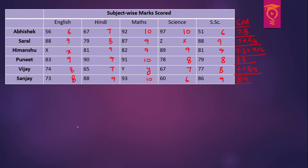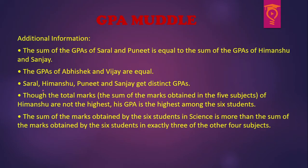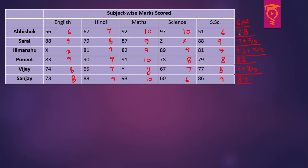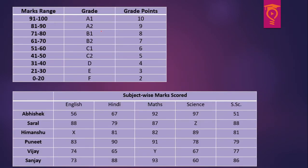From the additional information, the first point is that the GPAs of Abhishek and Vijay are equal. Abhishek's GPA is known to be 7.8, so Vijay's GPA should also be 7.8, and for that small y is supposed to be 9. This means capital Y is any number from 81 to 90, since scoring 81 to 90 gives a grade point of 9.